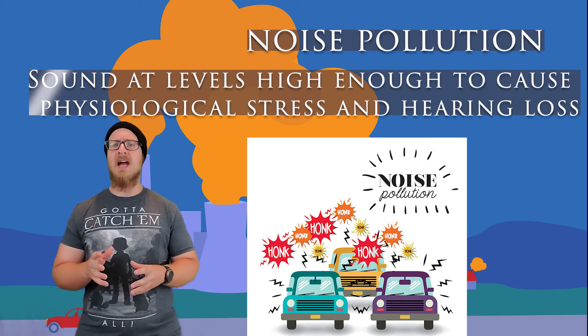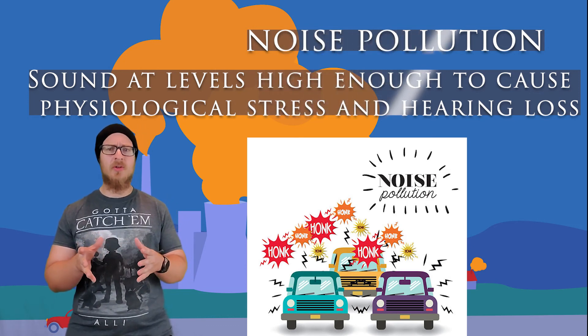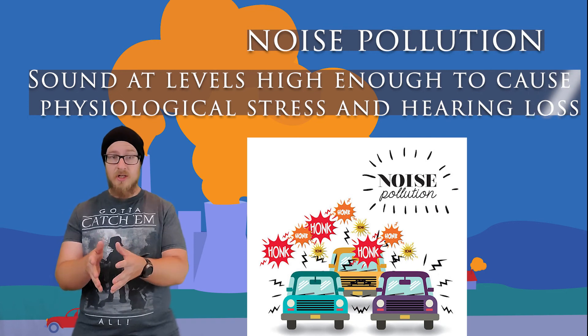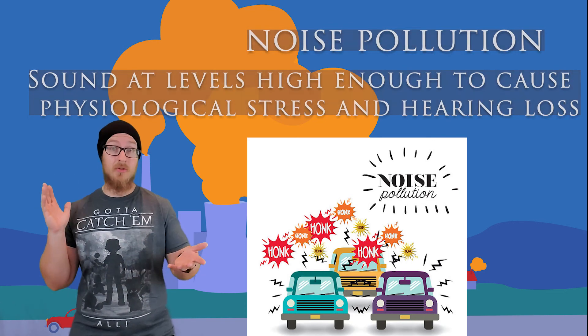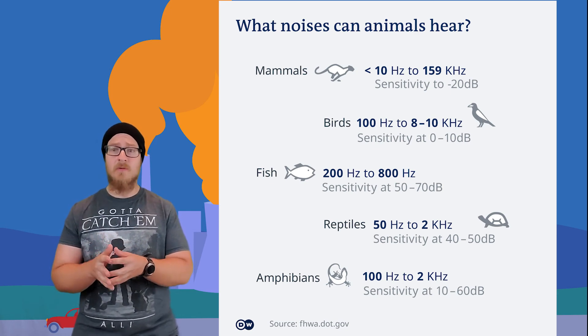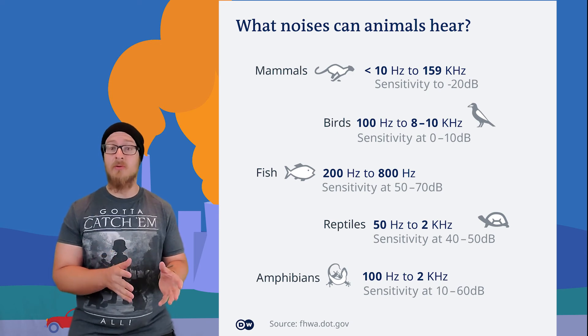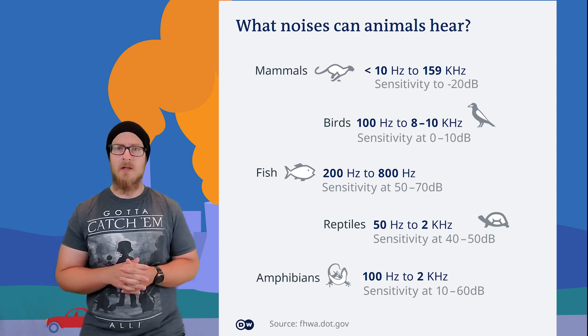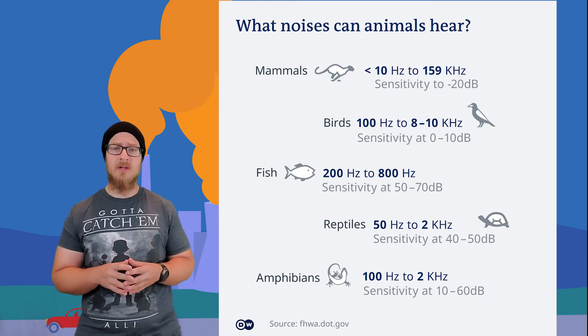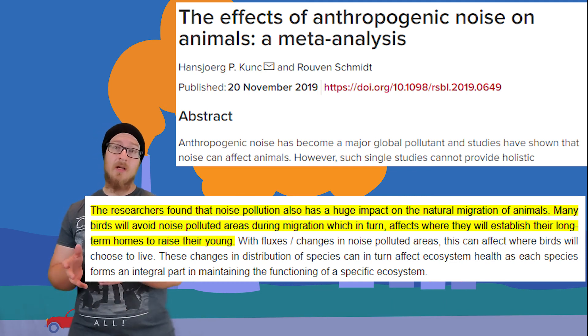There's also a pollutant we don't think about too often: noise pollution. Noise pollution is sound at levels high enough to cause physiological stress and hearing loss. The sources are usually centered in urban areas, with car noise, construction, and industrial activity. In animals, this can be especially significant — the noise masks sounds used for mating, limiting reproductive success, and blocks sounds used to communicate and hunt. This can cause hearing damage and changes in migratory routes as animals avoid loud areas like cities and industrial zones.